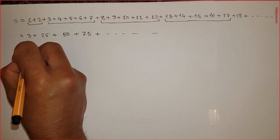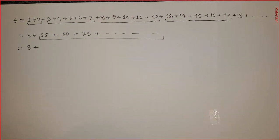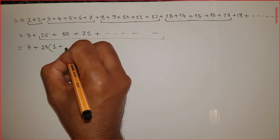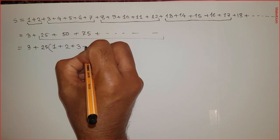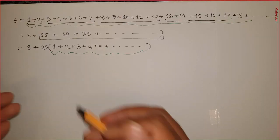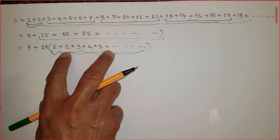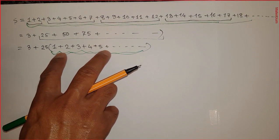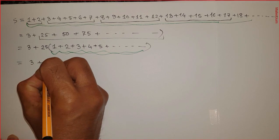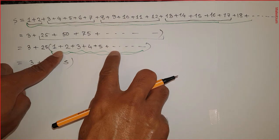The summation of the next group is 50, then 75, and dot dot dot up to infinity. Now the interesting part: keep the first three values alone and take 25 as a common factor from the rest of the series. If I take 25 as common: 25 becomes 1, 50 becomes 2, 75 becomes 3, then 4, then 5, and plus dot dot dot up to infinity. Interestingly, this part is again equal to S.